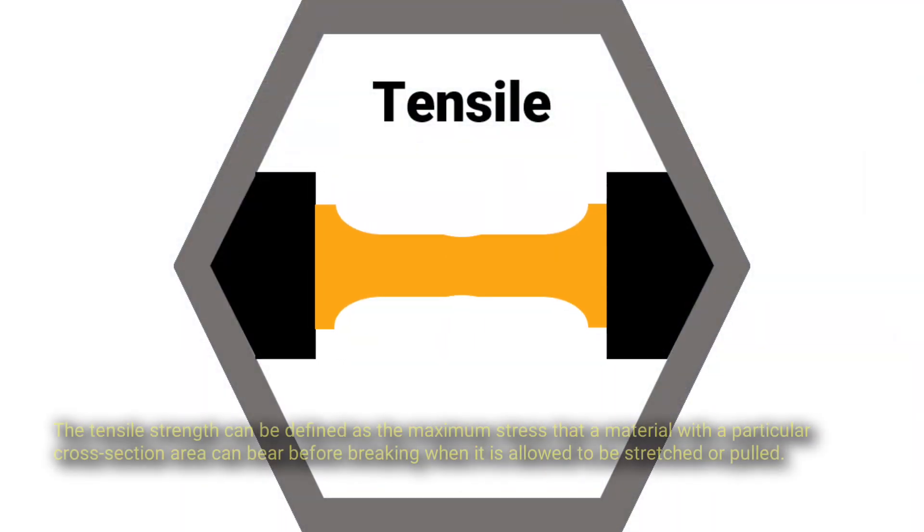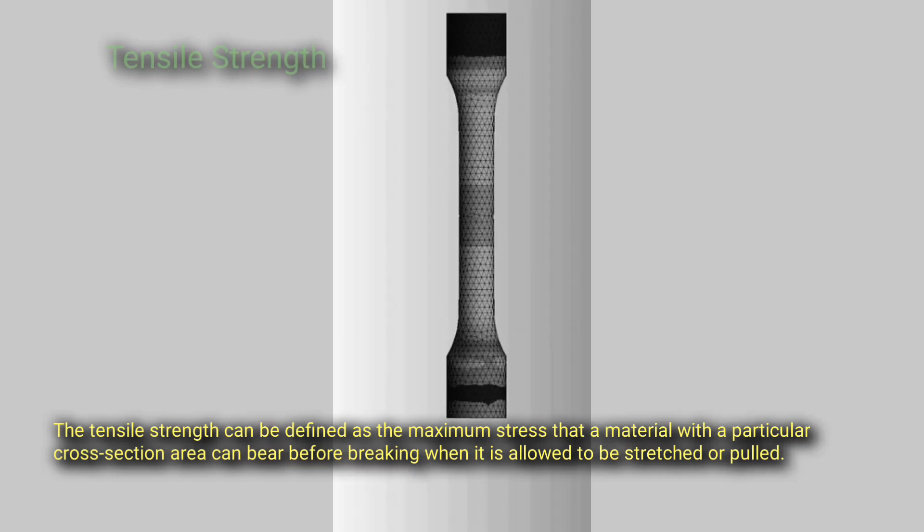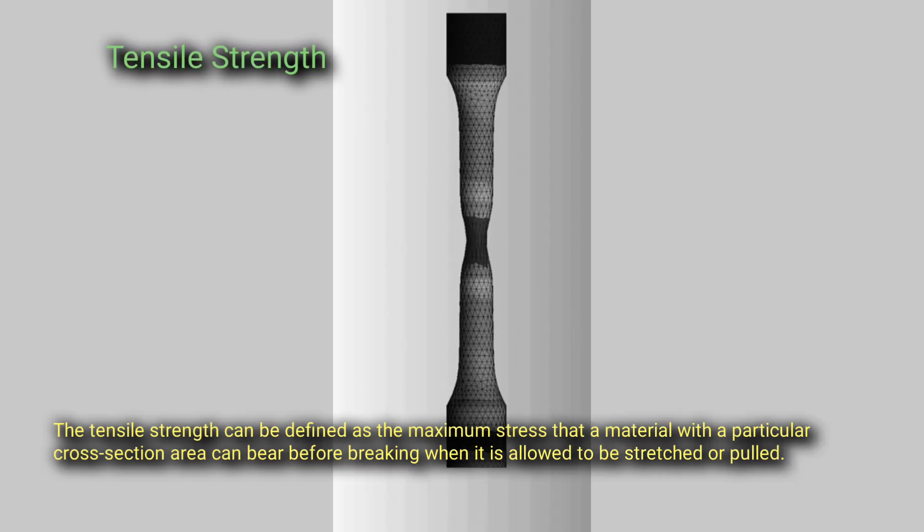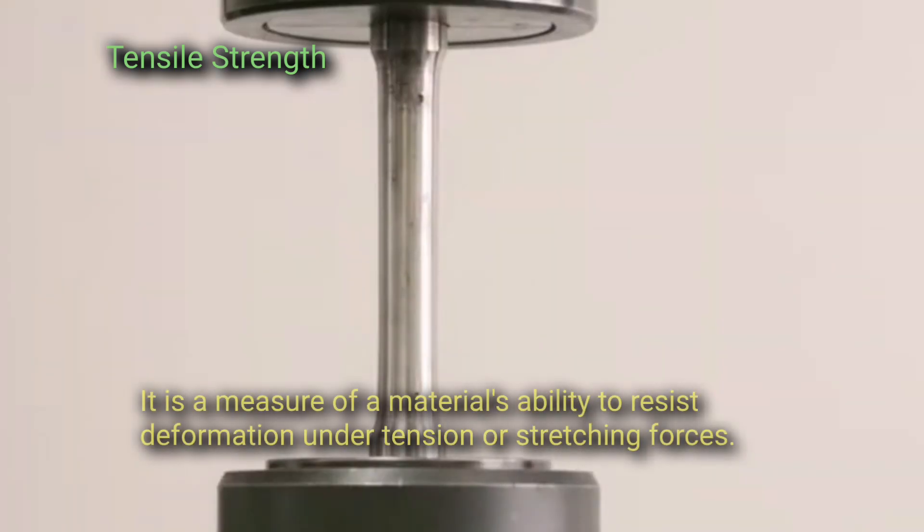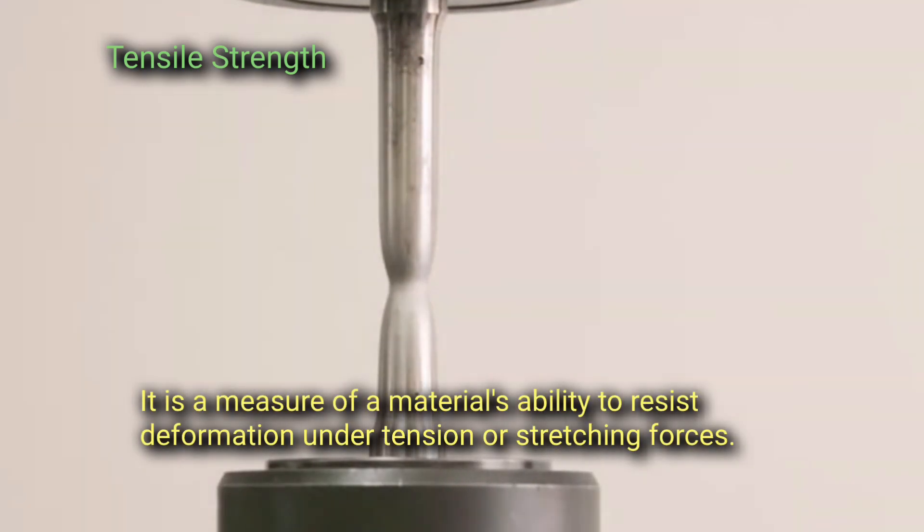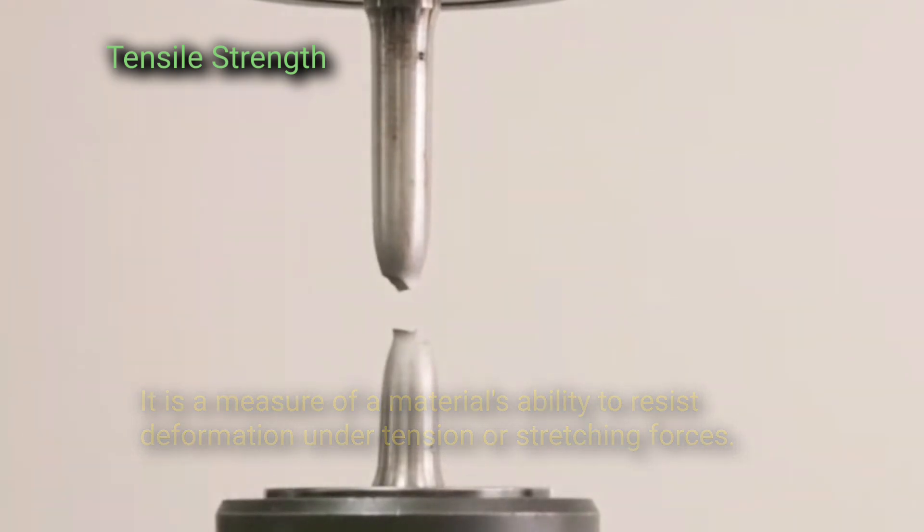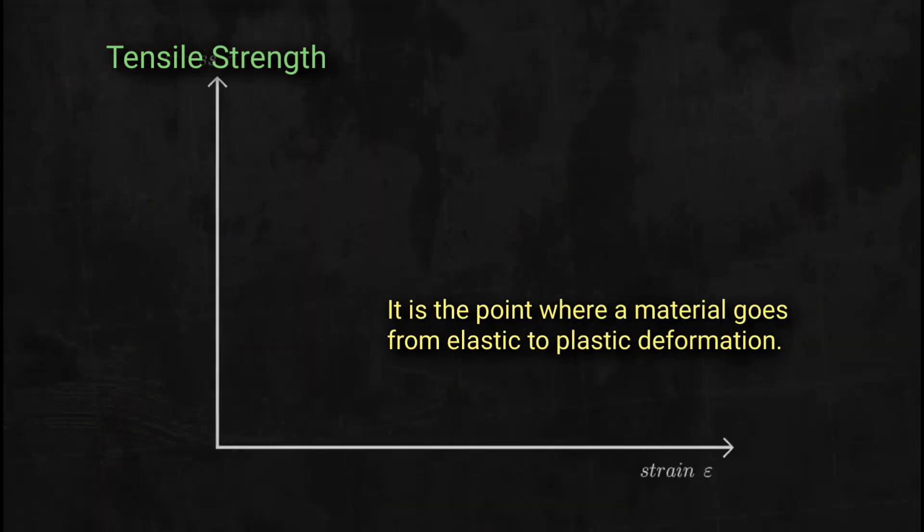Tensile strength. The tensile strength can be defined as the maximum stress that a material with a particular cross-section area can bear before breaking when it is allowed to be stretched or pulled. It is a measure of a material's ability to resist deformation under tension or stretching forces. It is the point when a material goes from elastic to plastic deformation.